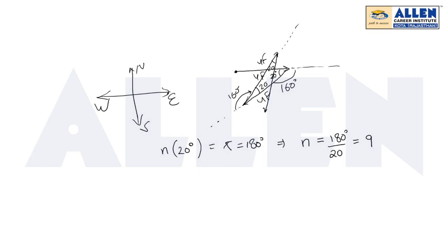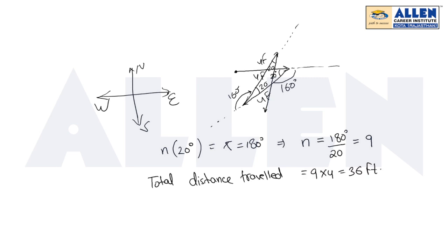लेकिन जैसे ही अपना ये 9 आया, तो अपने पास total कितना चले गई? 4 feet चल रहा है, एक बार में कितना चला है? 4 feet. Ant कितने times चलेगी? 9 times. अगर 9 times चल रही है तो total distance travel by ant to reach up to ant hill is equal to 9 into 4, that is 36 feet. This is our final answer.